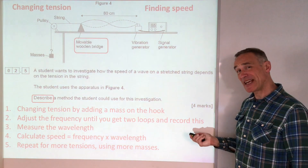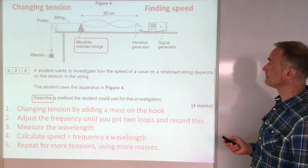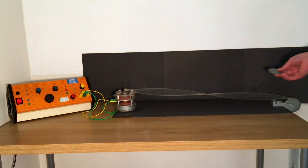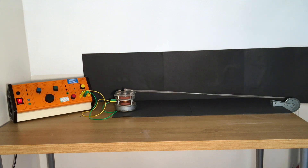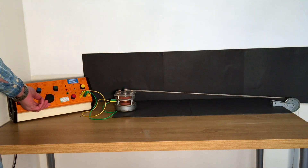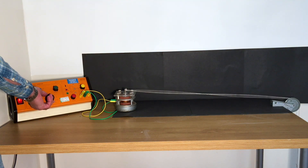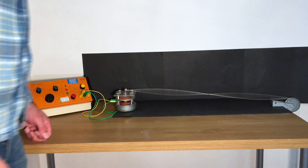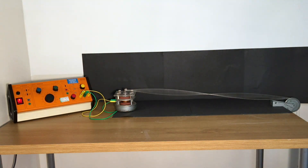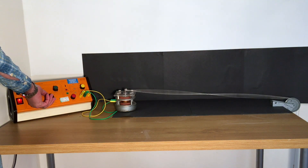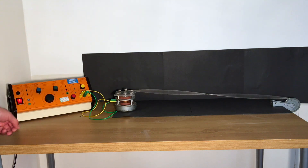A quick video proves the experiment: adding another mass collapses the waveform. Increasing the frequency until we get two loops again gives us one wavelength, and we measure the frequency and calculate the speed. Adding another weight collapses the waveform again; increasing the frequency allows us to recover the single wavelength and work out the speed for the new tension.